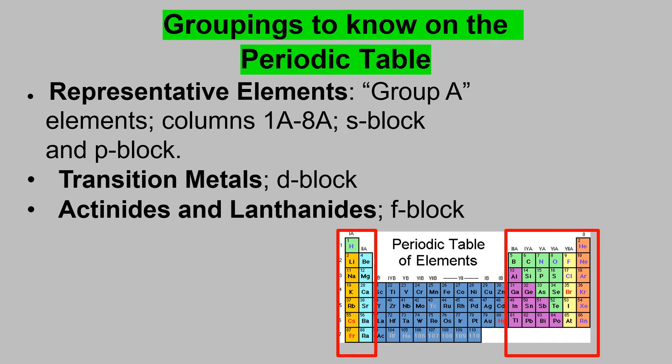There are some other groupings to know on the periodic table. You need to know the term representative elements — those are the group A elements: 1A, 2A, and 13 through 18. That's the S block and the P block. The transition metals are your D block. And then your F block is going to be your actinides and your lanthanides. Lanthanide is your first 4F and actinium is your first 5F. Remember the terms representative elements, transition metals, actinides, and lanthanides.